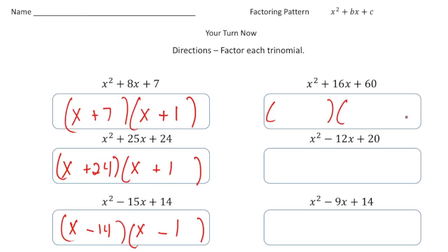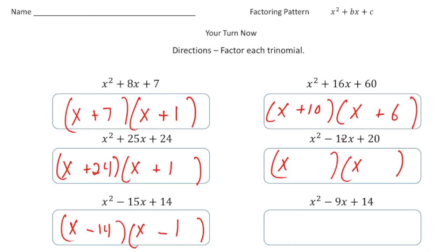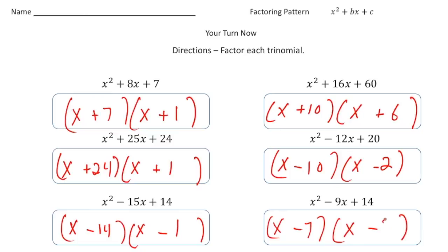Here we have x squared plus 16x plus 60 — that's an x and an x, with plus 10 and plus 6. For x squared minus 12x plus 20, again x and x, with minus 10 and minus 2, because negative 10 times negative 2 gives us 20, and negative 10 plus negative 2 gives us negative 12. And the last one gives us an x and an x with minus 7 and minus 2, because negative 7 times negative 2 is positive 14, and negative 7 plus negative 2 gives us negative 9 as a sum.